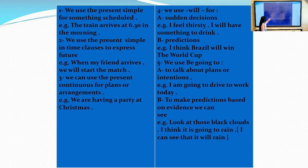The third one: we can use the present continuous for plans or arrangements. When I am planning to do something in the future, for example, tomorrow or next week, I will use present continuous to express something in the future. For example, we are having a party at Christmas. Maybe tomorrow morning, next week, next month, I am planning.